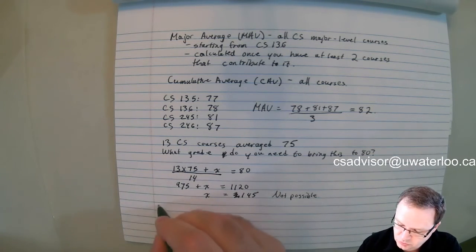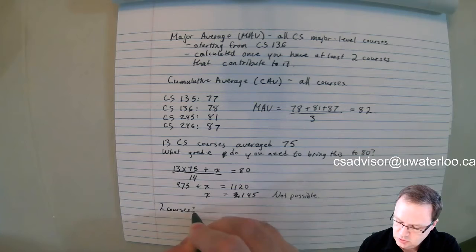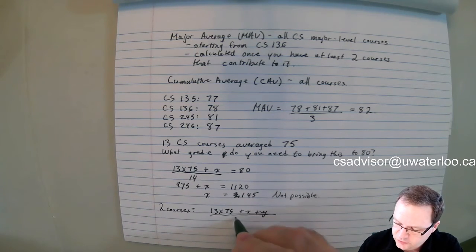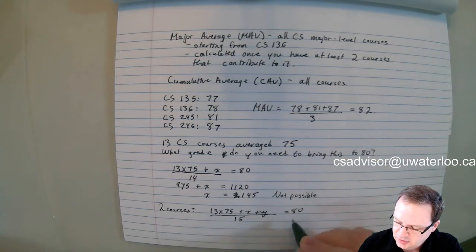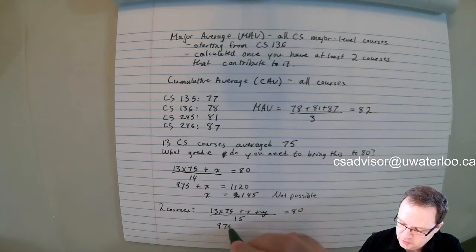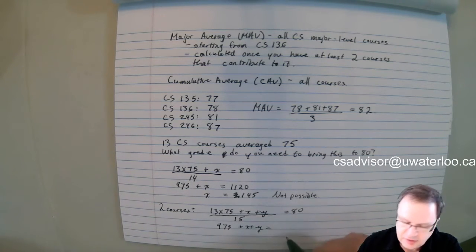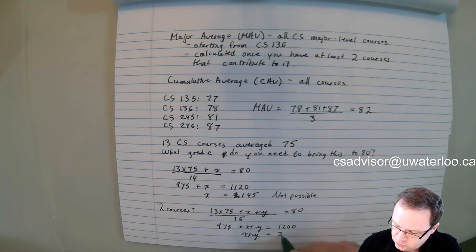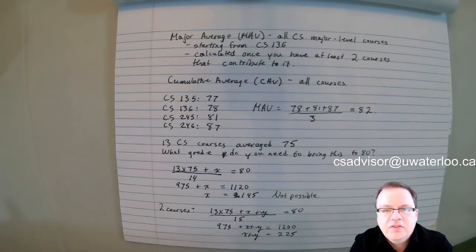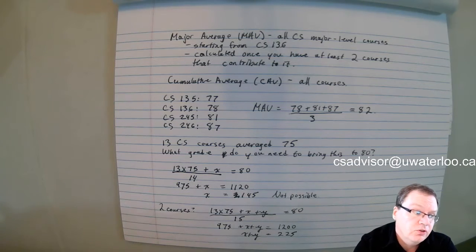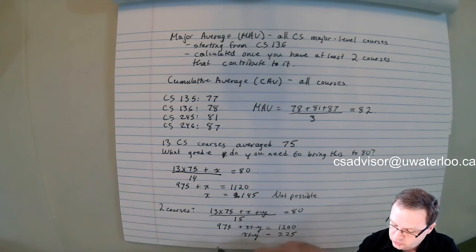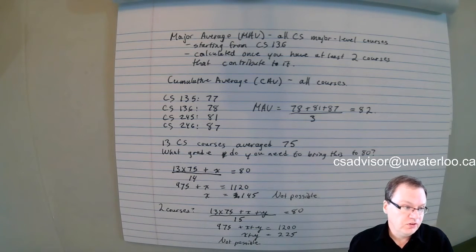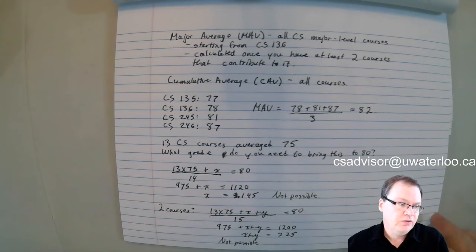What if you take 2? Well, then it's 13 times 75, plus X, plus Y, over 15 this time, gives you 80. 13 times 75 is 975, plus X, plus Y, 80 times 15 is 1200. And so now we see that X plus Y is 225. And since X and Y are grades, the maximum value they can have is 100, so they're not going to be able to total 225. So still not possible. So with two courses, it's still not possible to bring your average from 75 to 80 if you've already got 13 courses.